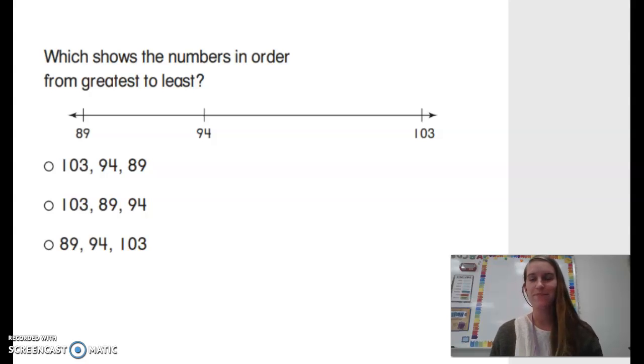All right, Math Talk. Explained which shows the numbers in order from greatest to least. So that means greatest number, the largest number, to the smallest number. Well, they already put them in order or they already placed them.